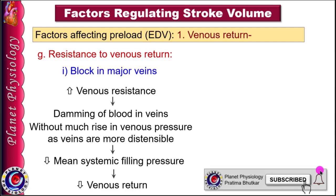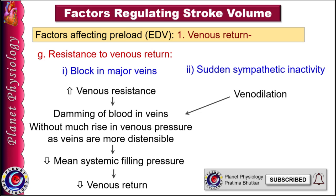Obstruction to large veins increases resistance to venous return and decreases it. As veins are highly distensible, blood accumulates in them without much rise in venous pressure, reducing venous return. Sudden sympathetic inactivity leads to venodilation and blood pools in the venous system, reducing mean systemic filling pressure and venous return. Normally about two-thirds of resistance to venous return is determined by venous resistance and one-third by arteriolar resistance, due to their difference in compliance.